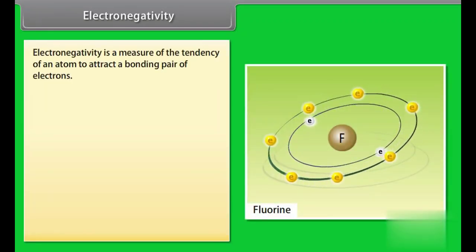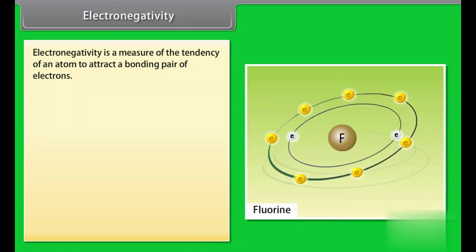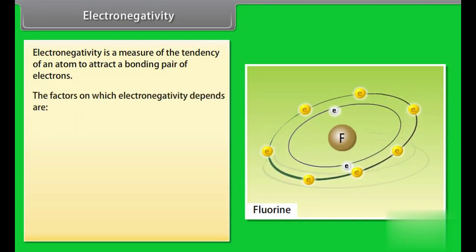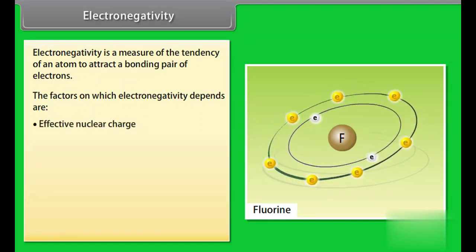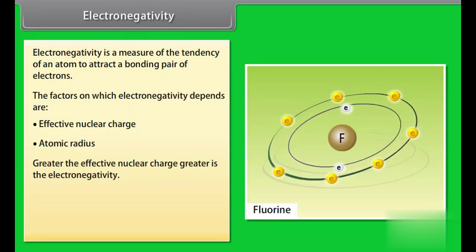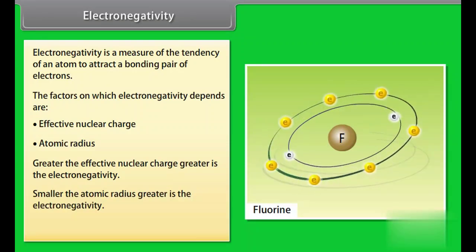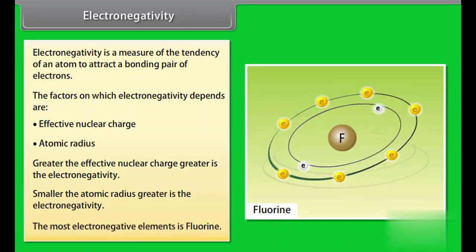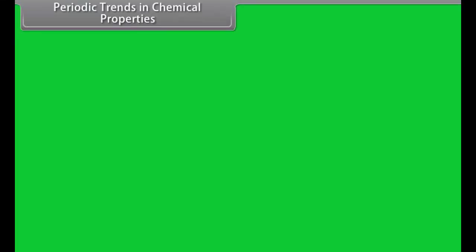Electronegativity: Electronegativity is a measure of the tendency of an atom to attract a bonding pair of electrons. The factors on which electronegativity depends are: effective nuclear charge and atomic radius. Greater the effective nuclear charge, greater is the electronegativity. Smaller the atomic radius, greater is the electronegativity. The most electronegative element is fluorine.